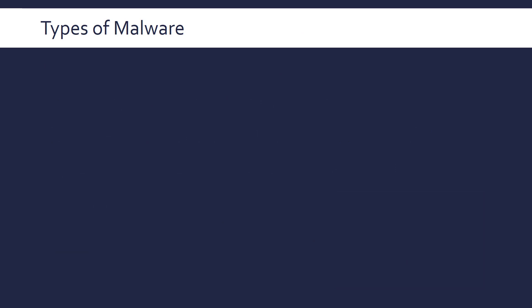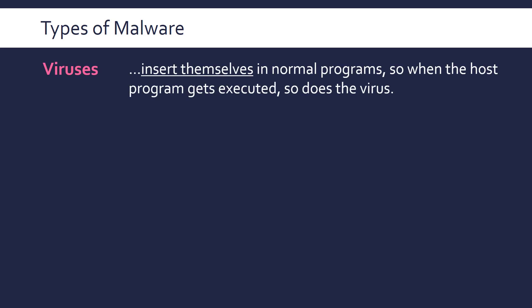Ransomware is a type of malware. Looking at four other common types: modern malware is unlikely to fall into just one category — it's going to contain several aspects and be more complicated than simply a virus or a worm. But looking at the separate types: a virus will insert itself into a normal program. The virus code gets merged into the code of a regular program, called a host program. When you run that host program, the virus code will be executed as well.